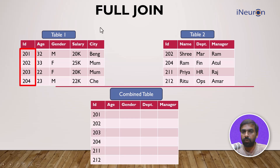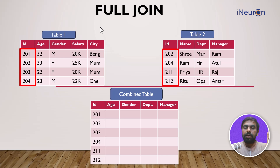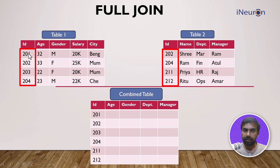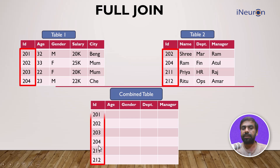The union of ids from table one — 201, 202, 203, 204 — and table two — 202, 204, 211, 212. Union means if an id is present in either table one or table two, regardless of whether it's common or not, it will be included. So 201, 202, 203, 204, 211, and 212 all appear in the combined table — all six rows are reflected.